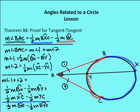Adding angle one and angle two together: one-half arc BX minus one-half arc BY, plus one-half arc XC minus one-half arc YC. Combining, one-half arc BX plus one-half arc XC gives one-half arc BXC (the major arc), and subtracting one-half arc BY plus one-half arc YC gives one-half arc BYC (the minor arc BC). Therefore, the measure of angle BAC equals one-half the measure of arc BXC minus one-half the measure of arc BYC — which is what we were looking for.